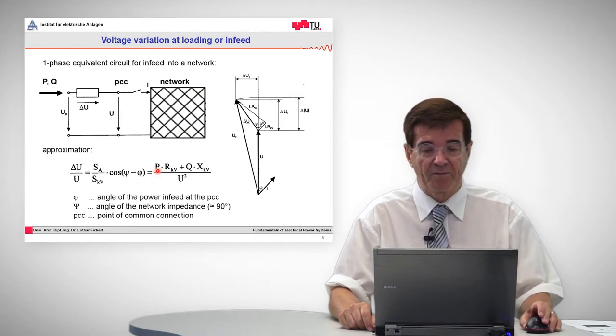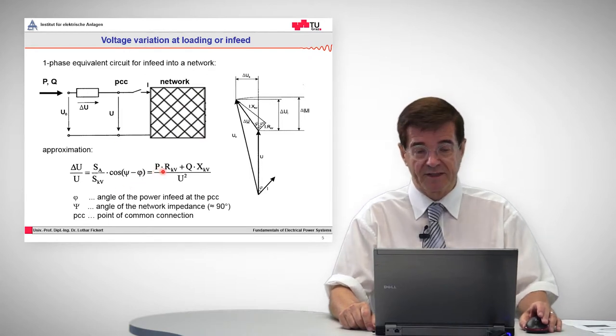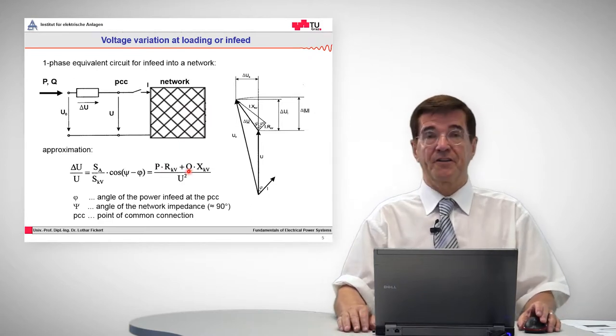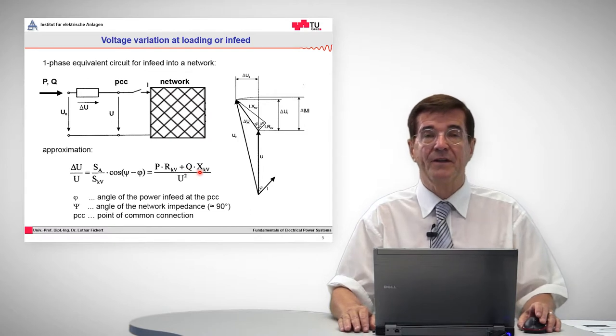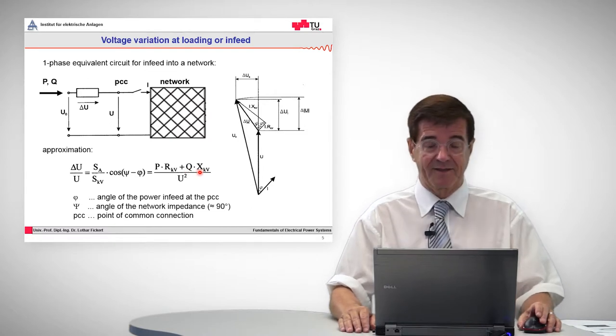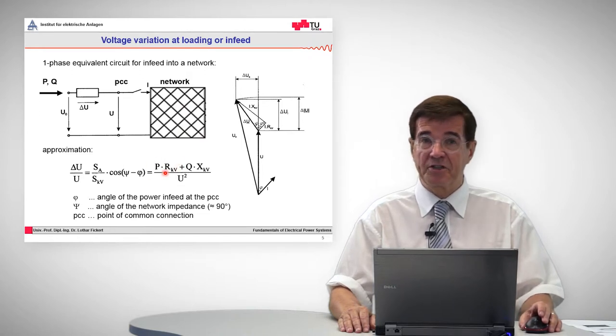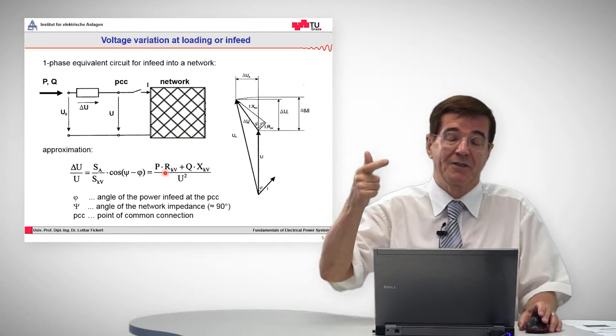This delta u depends on the power that is transferred and the resistance. There is another term which might be important: the reactive power in conjunction with the reactances of the system. As far as this first term is concerned, it cannot be changed. We want to have power, we have resistance.